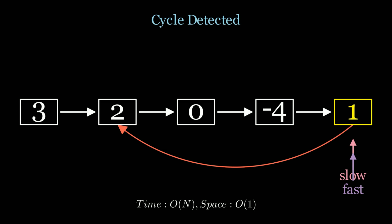This algorithm runs in O of n time complexity, but constant space because we're only using two variables, a slow and a fast pointer.